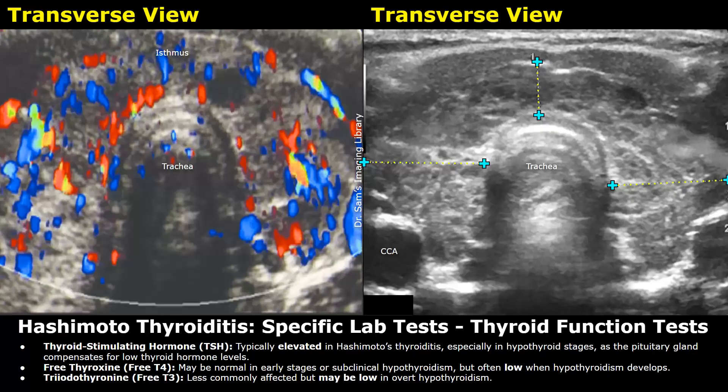The next test is free T4 (free thyroxin). It may be normal in early stages or subclinical hypothyroidism, but it is often low when hypothyroidism develops. Free T3 is less commonly affected but may also be low in Hashimoto thyroiditis.